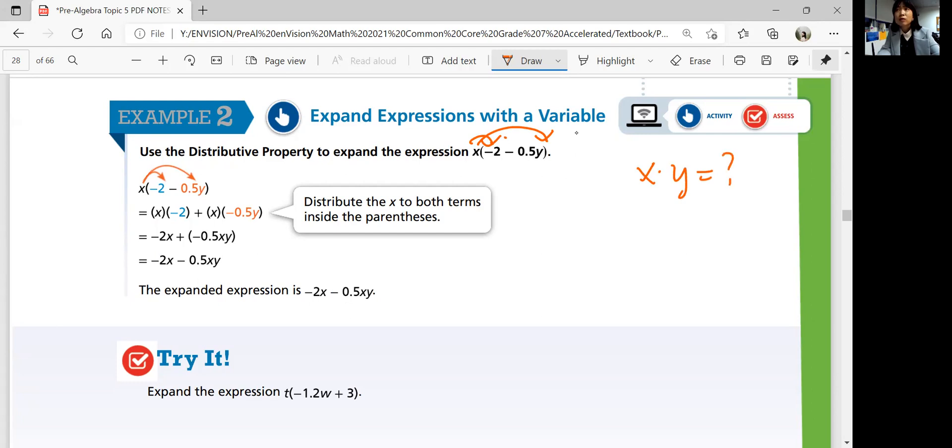You don't know what x is, you don't know what y is, but you know x and y are going to be different numbers. They could be the same, but they represent different numbers, right? So when you multiply them, x times y is just xy.